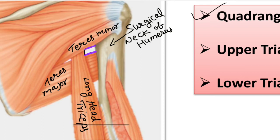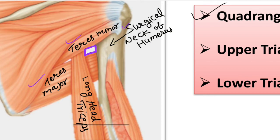Medially, the quadrangular space is bounded by the lateral border of the long head of the triceps. Laterally, it is bounded by the surgical neck of the humerus. So to summarize: superiorly bounded by the teres minor muscle, inferiorly bounded by the teres major muscle, medially by the long head of the triceps, and laterally by the surgical neck of the humerus.